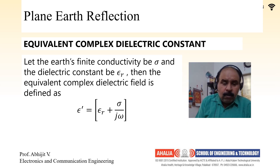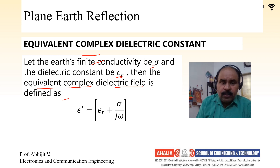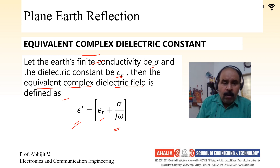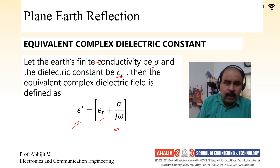The equivalent complex dielectric constant: let the earth's finite conductivity be σ and the dielectric constant be ε_r. The effective equivalent complex dielectric constant is ε' = ε_r + σ/(jω). This is the definition for an equivalent complex dielectric constant.